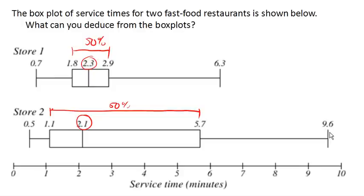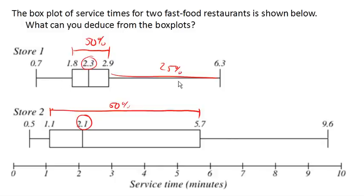We can also see this in the very large range. The first store seems to be more consistent in its delivery. In fact, 75% of people are served within 2.9 minutes, with only the unlucky 25% waiting longer. So if you're feeling lucky, you might try store two, since you might get served really quickly. But if you can't spare a large amount of time, store one is probably your better bet, since they seem to be more consistent in serving quickly.